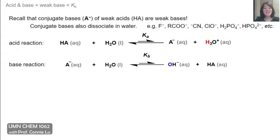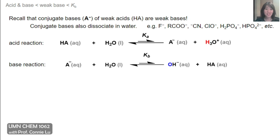In the next two slides, I'd like to develop an important relationship between Ka and Kb. Remember that weak acids and their conjugate bases are like two sides of the same coin. Conjugate bases, A⁻, are themselves weak bases, and that means they can also dissociate in water. Here's the reaction where we start with the weak acid, and in water it undergoes a Ka reaction or dissociation to form its conjugate base, A⁻, and the hydronium ion. If we instead start with the conjugate base A⁻ in water, then the Kb reaction occurs, where the base dissociates to form hydroxide ion and the weak acid.